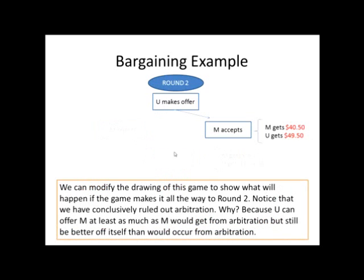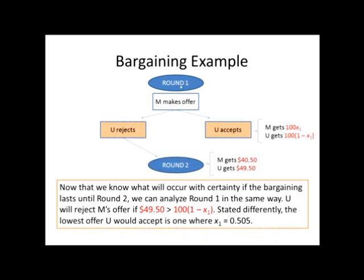We can adjust our drawing to gray out all the arbitration paths because none of that matters — we're never going to be in arbitration. If it gets to round two, the union will make an offer that management will definitely accept, and those will be the outcomes. The reason we know this is because the union can offer management at least as much as they'd get from arbitration and still make themselves better off. Management is no worse off compared to arbitration, and the union is definitely better off. So if it goes to round two, this is how round two will end.